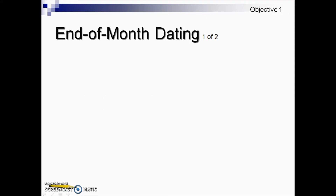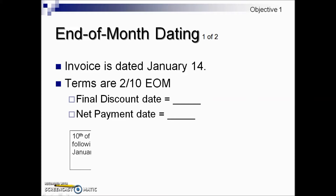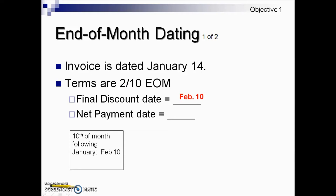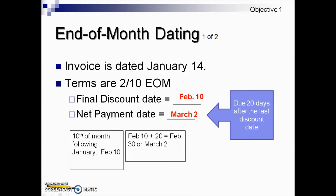Let's take a look at some examples of EOM dating. We're given an invoice dated January 14th. The terms are 2/10 EOM, and they're asking us for the final discount date and the net payment date. Because of the EOM terms, we don't start the clock ticking until February 1st. We add our 10 days, which means our final discount date is February 10th. The net payment date — since nothing is stated in the terms regarding the net amount — we add 20 days after our final discount date, which puts us at February 30th, which isn't an actual date, so that translates into March 2nd.